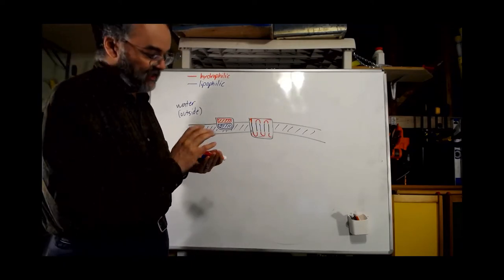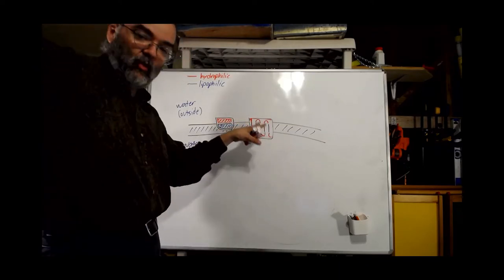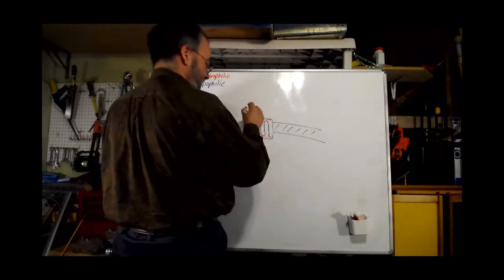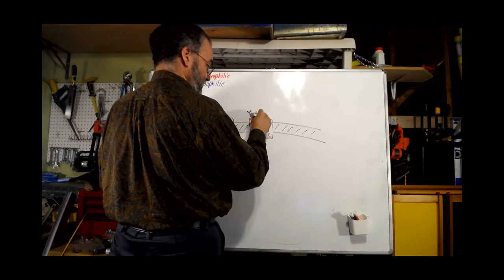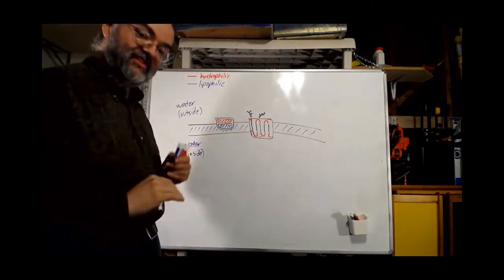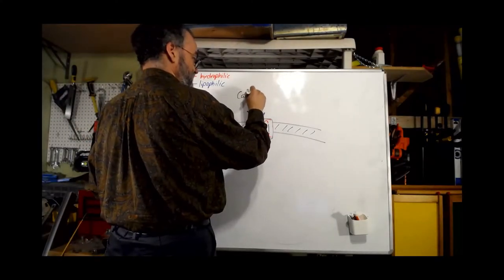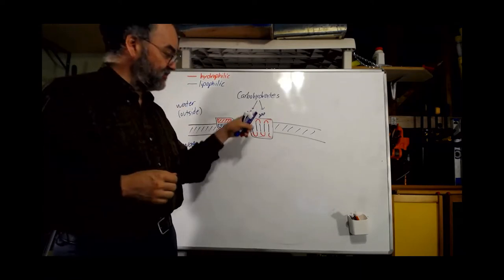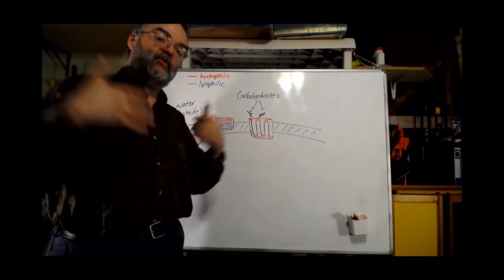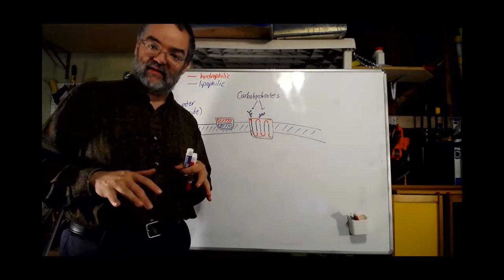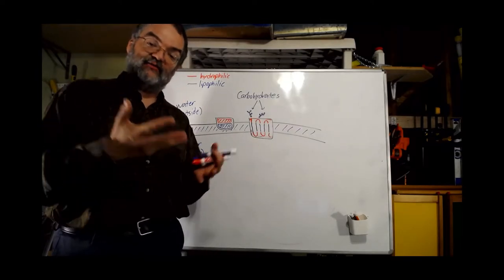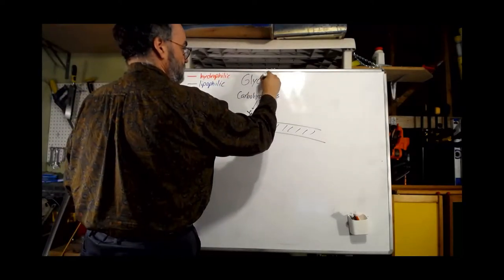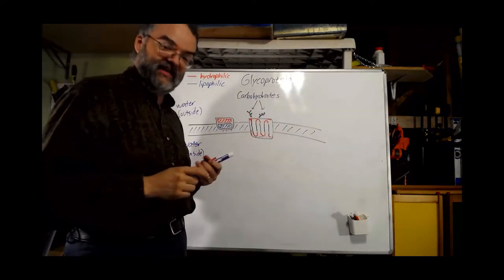Now one important thing is to think about what are these proteins attached to. Often these membrane proteins will have chains of carbohydrates — like chains of glucose or other monosaccharides — stuck to them on the outside, almost like little signal tags. These chains are often signals to other things; when they encounter those, they can recognize it and it carries information about what this cell is or what it's doing. These proteins with carbohydrates on them are called glycoproteins — a very common thing that you find in cell membranes.